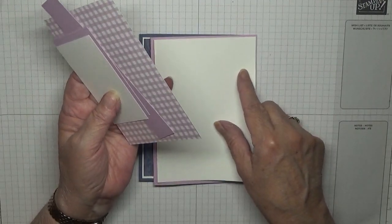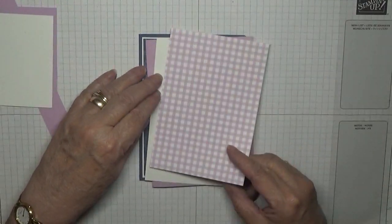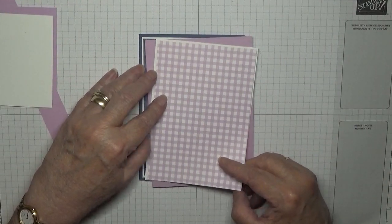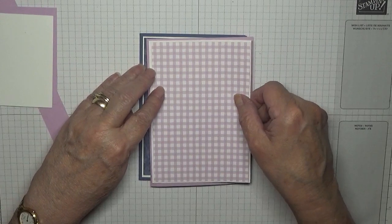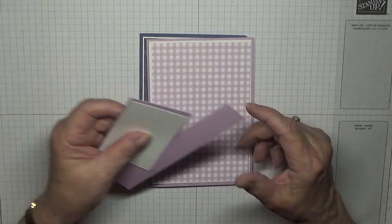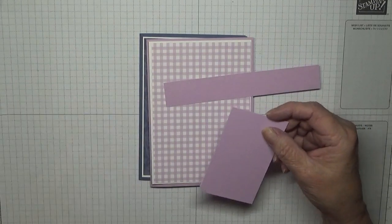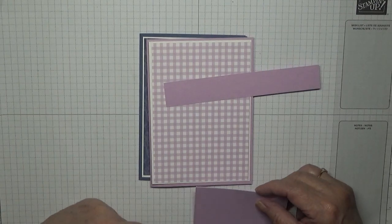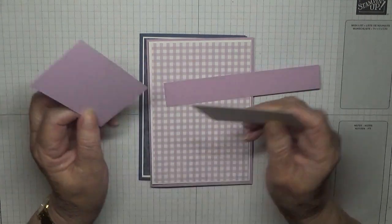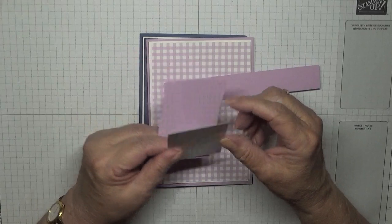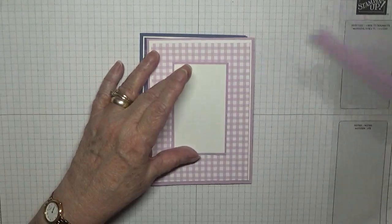I've got some Pansy paper left over so I'm going to use this, and this is five and a half by three and three quarters. I have a piece of Fresh Freesia that is two and a quarter by three and three quarters. So this one will be two and one eighth by three and five eighths.